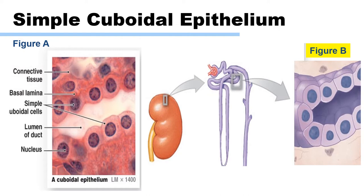Simple cuboidal epithelium offers greater protection than simple squamous due to its increased thickness. It also has secretory, absorptive, and excretory functions. Simple cuboidal epithelium is found in the ducts of the salivary glands, liver, pancreas, thyroid glands, and kidney tubules.